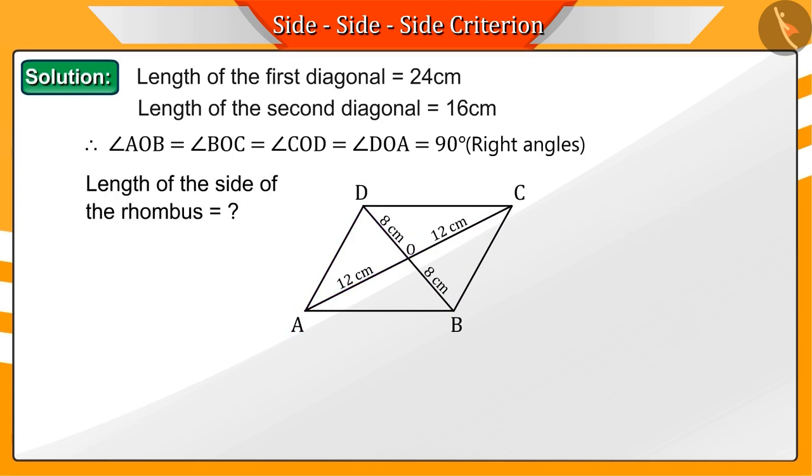Since we need to find the sides of this rhombus, if we take any one triangle, we can find the length of the sides. Come on, let's discuss triangle AOB.